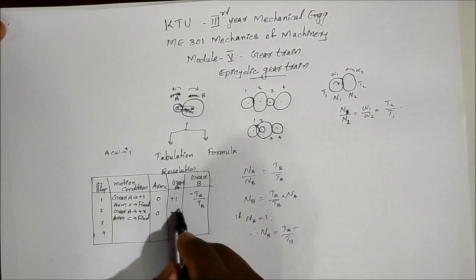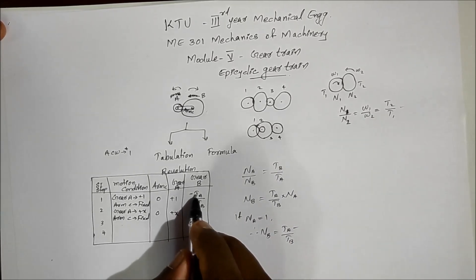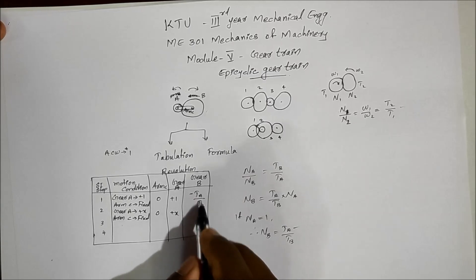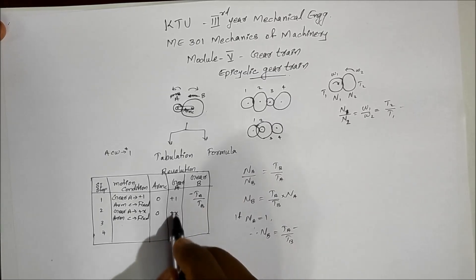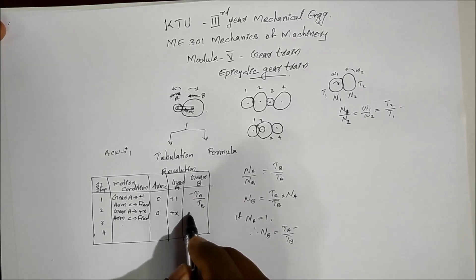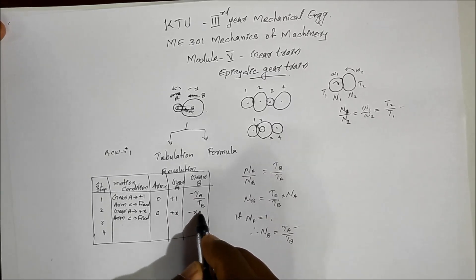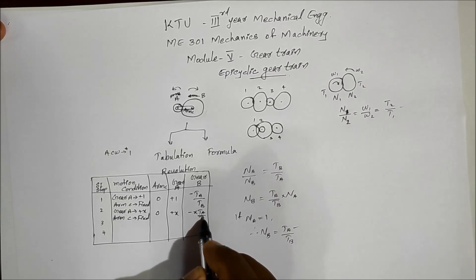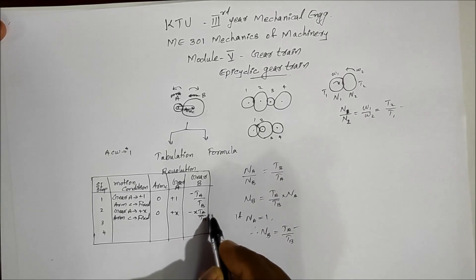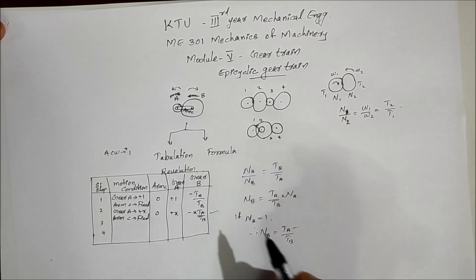The corresponding value for Arm C is plus 1, and for Gear B it is minus TA by TB — so the Gear B entry becomes plus X times minus TA by TB, which equals minus X times TA by TB. This is the general case for Step 2.